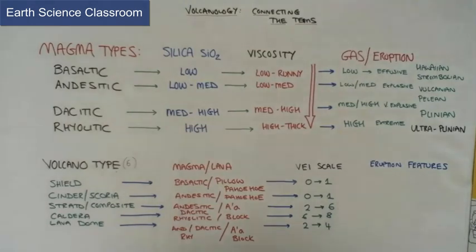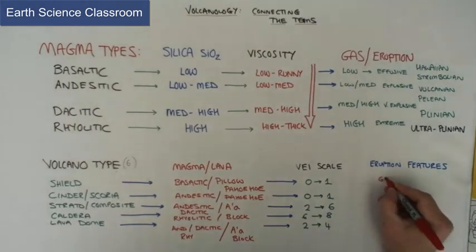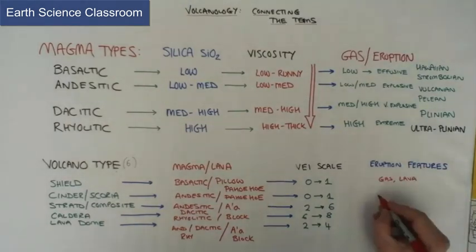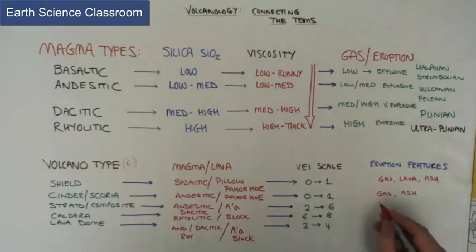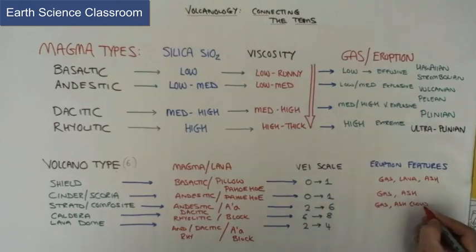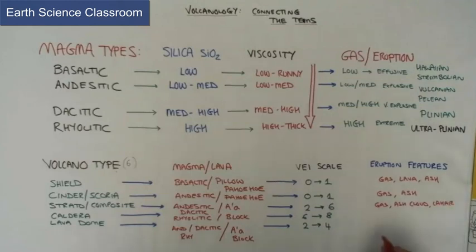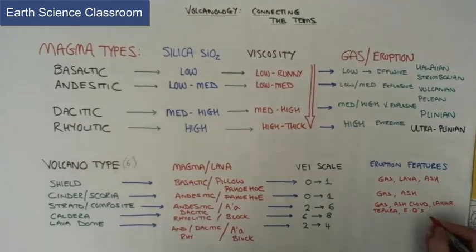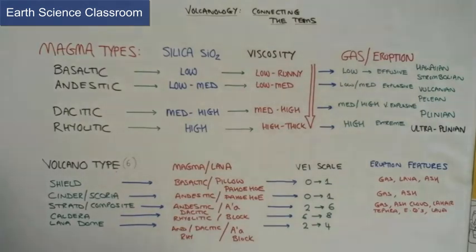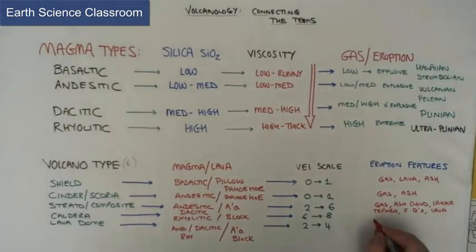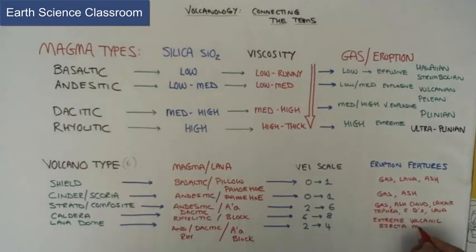Then we get the features. What kind of features will there be on each eruption based on the magma, based on the gas, and based on the volcano type. In terms of the amount of pyroclastic material being released or the ejecta, it's based on the ash cloud and the height and the amount of material each volcano is going to release. And this is based on the VEI scale.